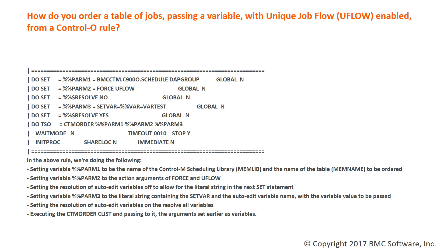In the above rule, we're doing the following. First, we're going to set PARM1 to be the name of the Control-M Scheduling Library, or MemLib, and the name of the table, MemName, to be ordered. Then we're going to set variable %%PARM2 to the action arguments of uFlow and force. Then we're going to set the resolution of auto-edited variables off to allow for the literal string in the next set statement. Then we're going to set %%PARM3 to be the literal string containing the set var and the auto-edited variable name with the variable name to be passed. Then we're going to set the resolution of auto-edited variables back on to resolve all variables. And finally, we're going to process the Do TSO CTM Order CLIST, passing to it the arguments set earlier as variables.